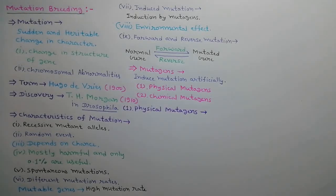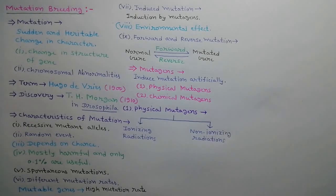First, we will discuss physical mutagens. They are divided into two categories: ionizing radiations and non-ionizing radiations.